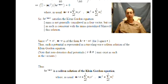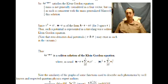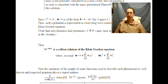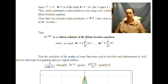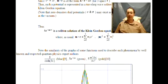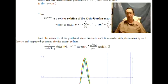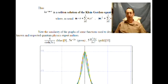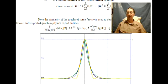Note that the zero densities dual potentials may exist as such in the vacuum. And so we see that ke^(-|m·r|) is the soliton solution of the Klein-Gordon equation.